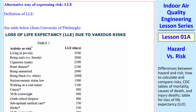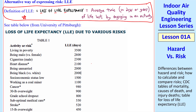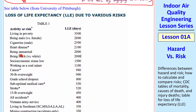There's another alternative way of expressing risk, and that is LLE — the loss of life expectancy. It's defined as the average time, typically in days or years, of life lost by engaging in an activity. Here's a table from the University of Pittsburgh that lists various activities and how many days of life you lose on average by engaging in them.